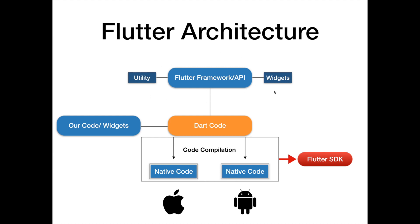Flutter framework provides pre-written and predefined functions with UI elements and utilities that we can use. We write the code, add it, compile it, convert it to native, and run it on the platform. This is the Flutter SDK. This is the first part of Flutter architecture.